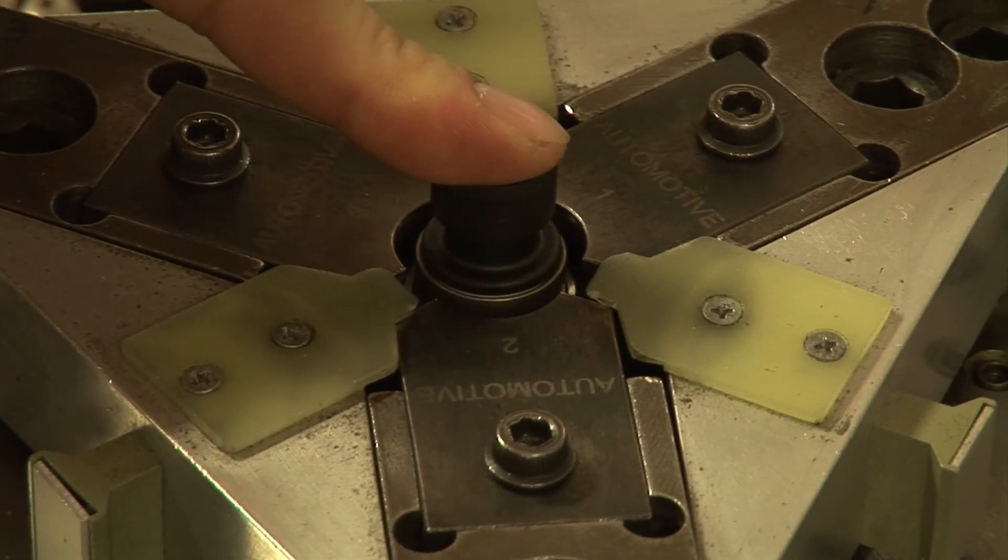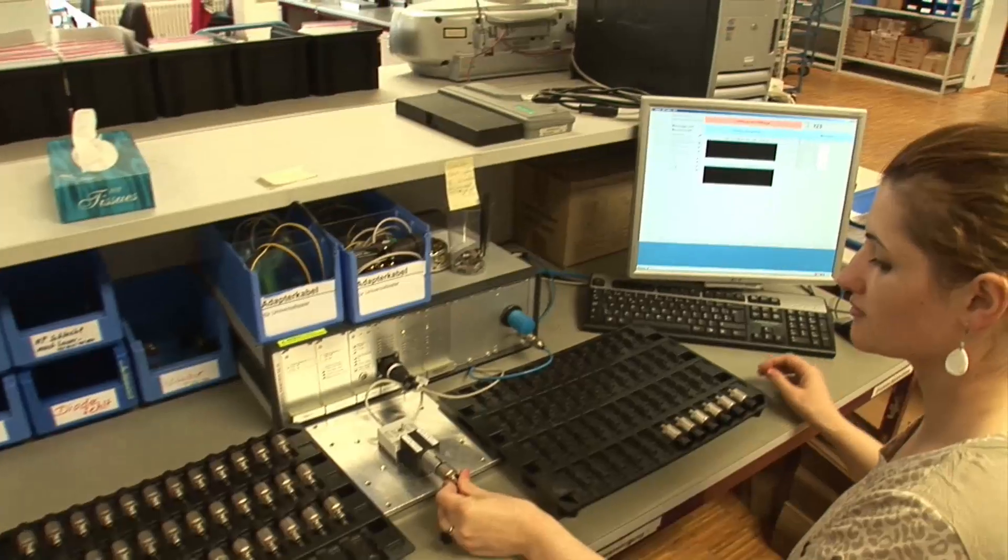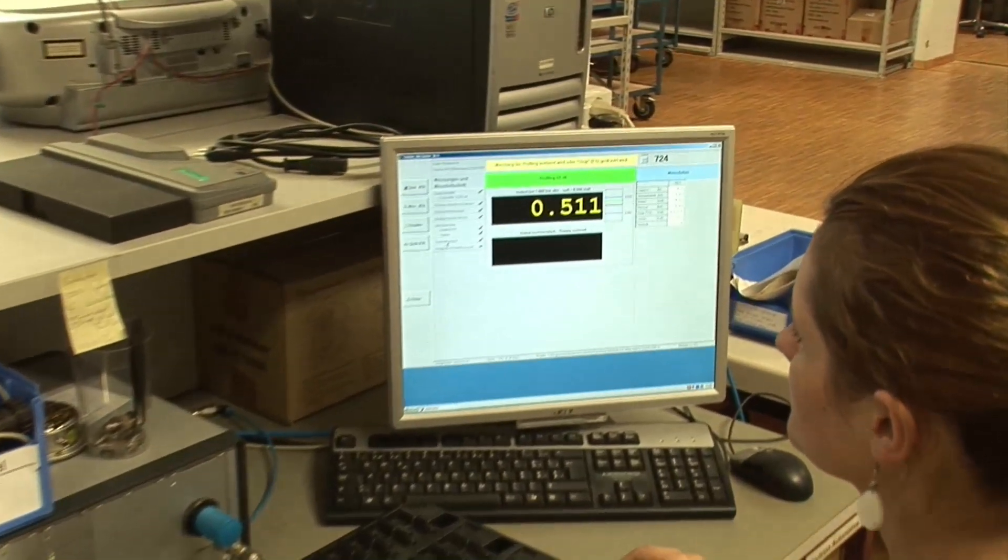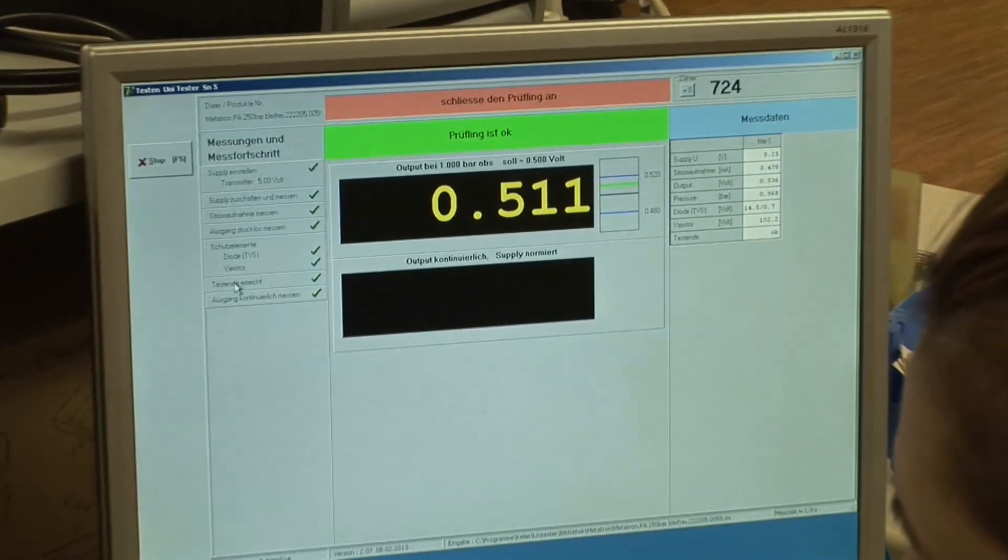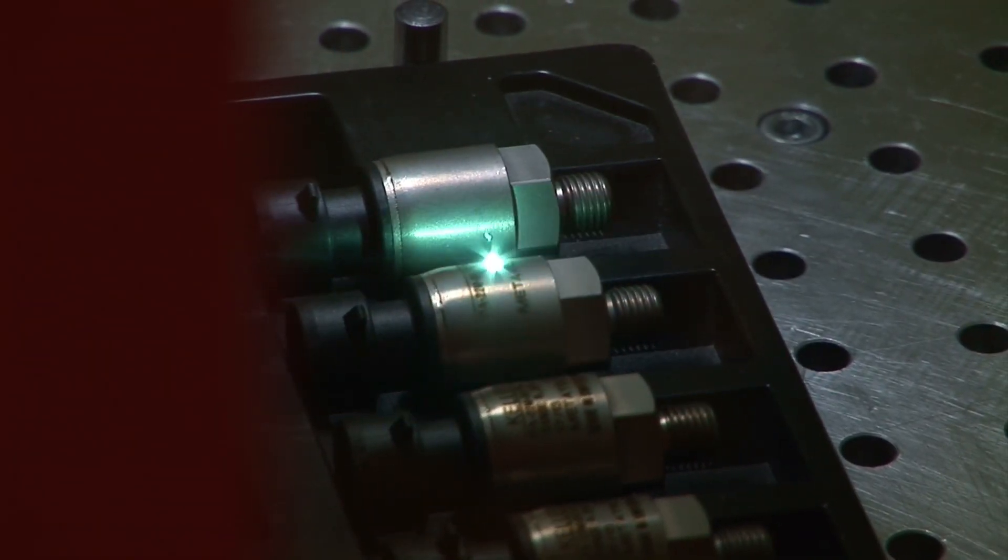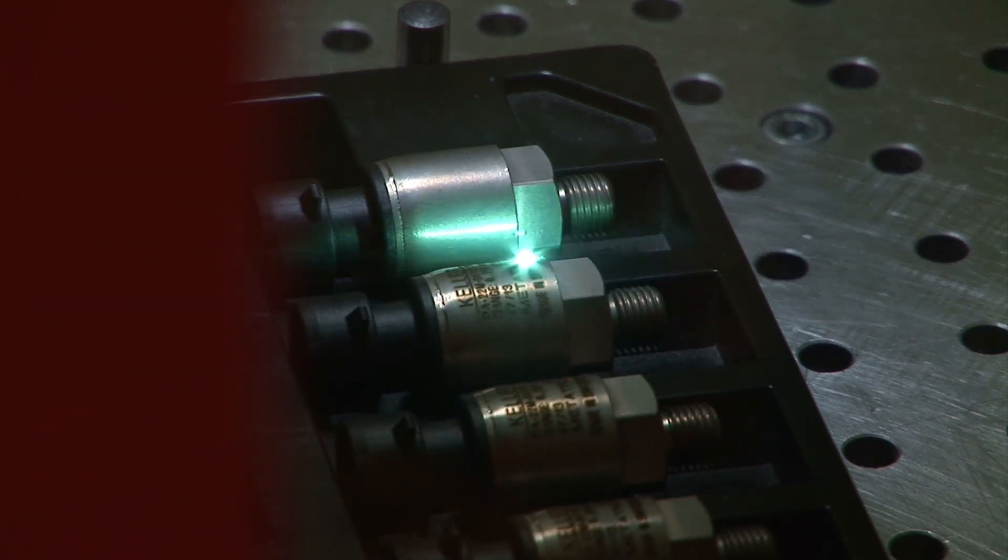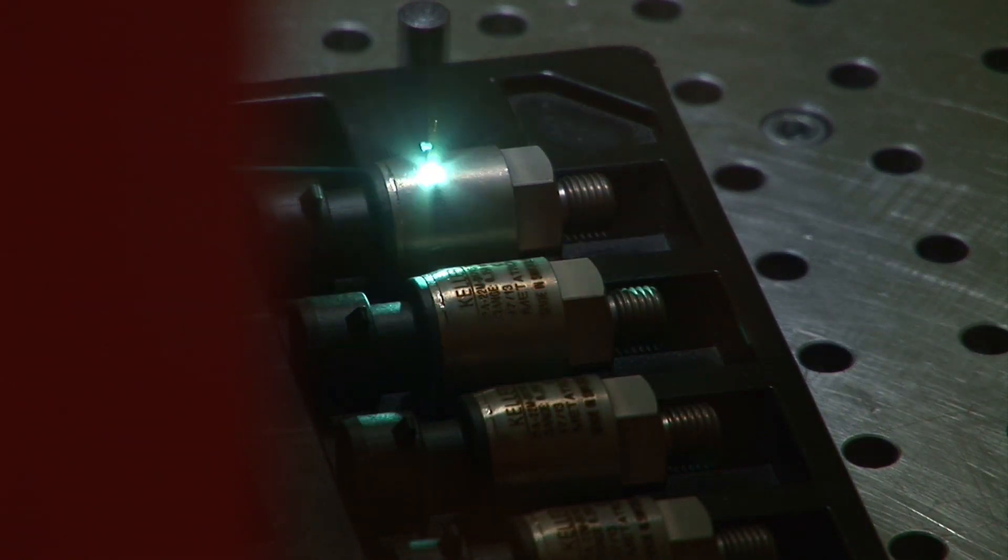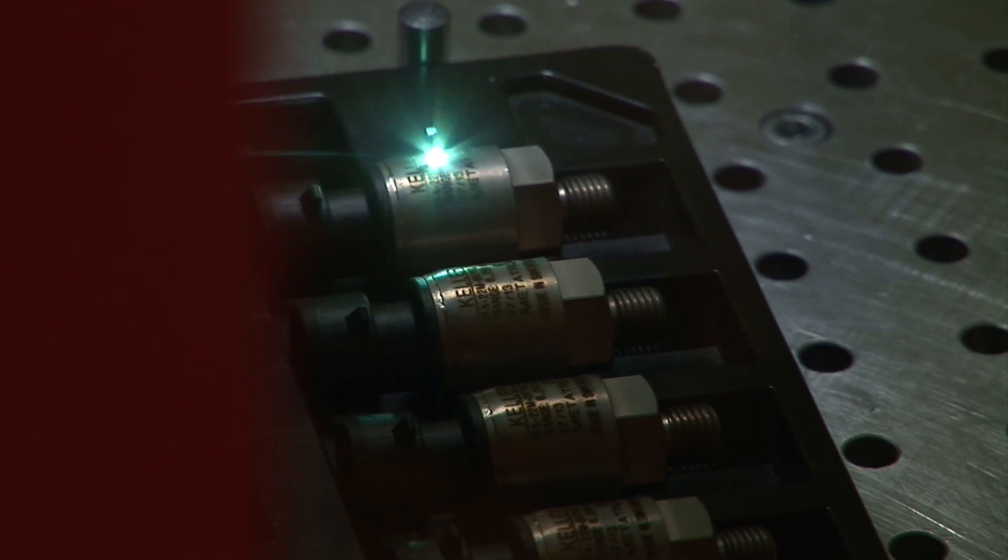The sensor is now compensated and is sealed and inspected before being dispatched. The final production stage consists in labeling the pressure sensor. The finished pressure transmitter is assigned its type designation.